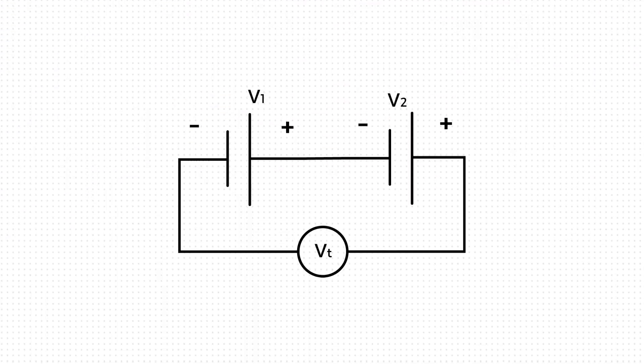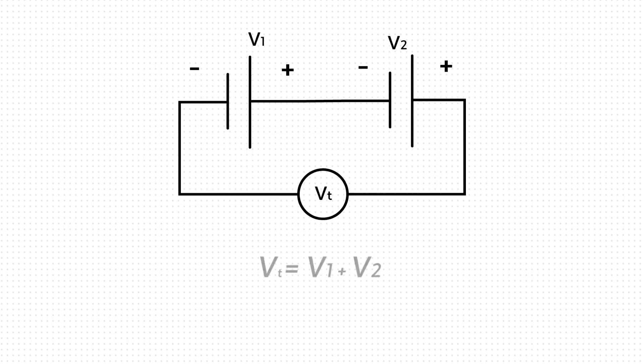If you have a voltage source going from negative to positive and the other voltage source connected in series also going from negative to positive, you will need to add them together because they are in the same sense.